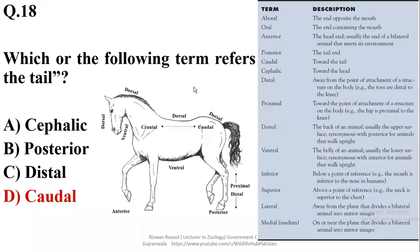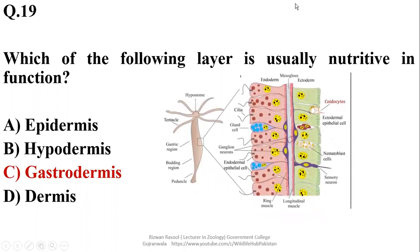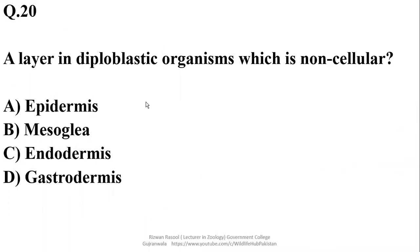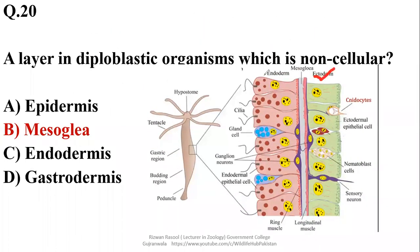Which of the following layer is usually nutritive in its function? The layer which is mostly concerned with digestive secretions and nutrition is gastrodermis, so right option is Charlie. It evolves from endodermis or endoderm and it is concerned with the production of digestive secretions. A layer in diploblastic organisms which is non-cellular - the non-cellular layer in case of diploblastic organism is mesoglia and it is found between epidermis and endodermis.